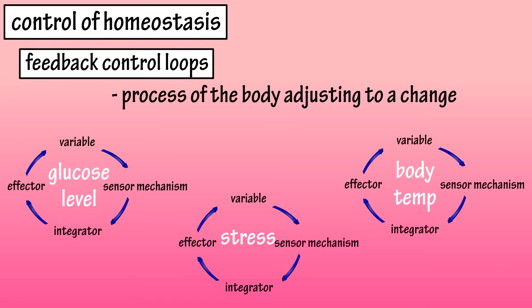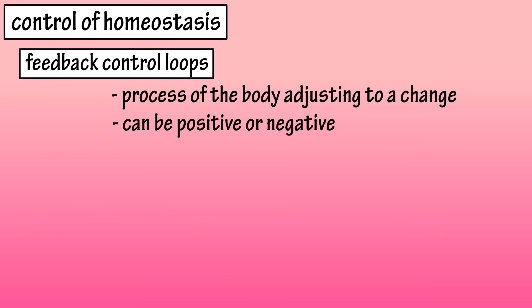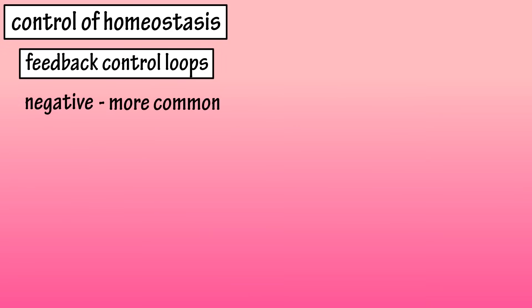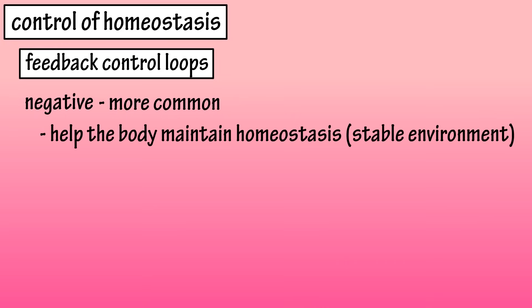Control of homeostasis. There are many different feedback control loops in the body, and these homeostatic control systems can be based on positive or negative feedback. The key difference between positive and negative feedback is their response to the change. Negative feedback control loops are the more common of the two, and they respond to a change by helping the body maintain a stable homeostatic condition.